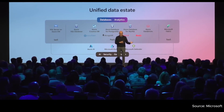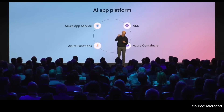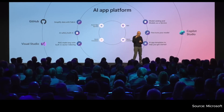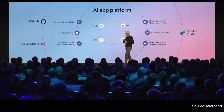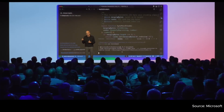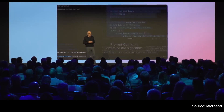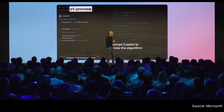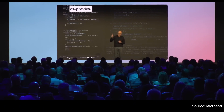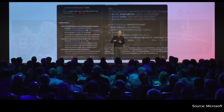We are also building an app server. So if you have infra and data, you also need an application server. With O1 coming to GitHub Copilot, you can use AI to do the next level of optimization. The auto-encoder we use for GitHub Copilot is being optimized by O1.